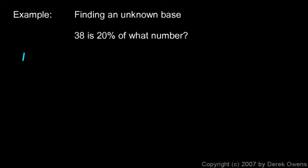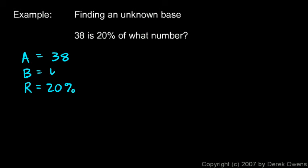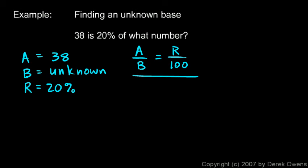One more example — finding an unknown base: 38 is 20% of what number? Here, 38 is the amount, 20% is the rate, and the base is unknown. We set up the percent proportion: a/b = r/100. This proportion works every single time for a percent problem.